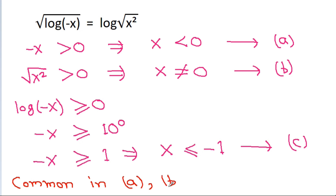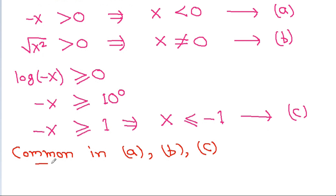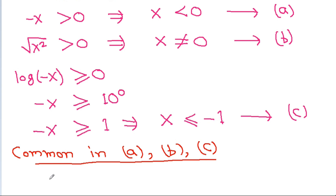Now looking at the common solution across equations (a), (b), and (c): equation (a) gives x negative, equation (c) gives x less than or equal to minus 1. So the common domain for a, b, and c is x less than or equal to minus 1.